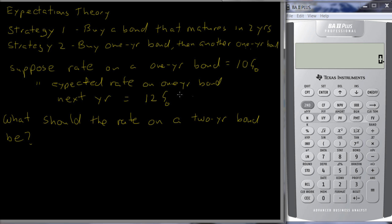Intuitively, let's just look at this. It seems like you should get somewhere halfway in between these two. Okay, if it's 10% this year and 12% next year, it looks like to get me to lock in the rate for two years, you're going to have to give me about 11%. Okay, mathematically it looks like this.